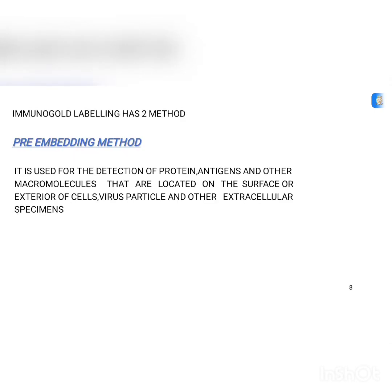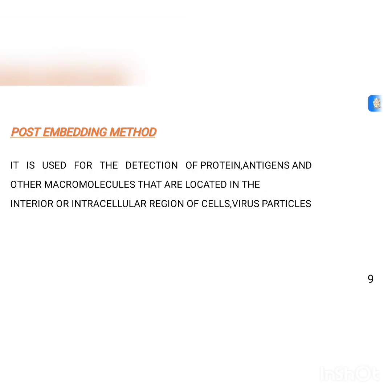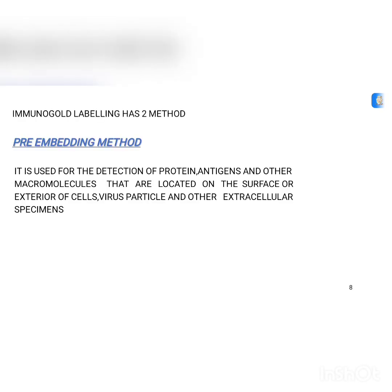Immuno gold labeling has two methods: the pre-embedding method and the post-embedding method. The pre-embedding method is used for the detection of protein antigens and other macromolecules that are located on the surface or exterior of cells, virus particles, and other extracellular specimens.